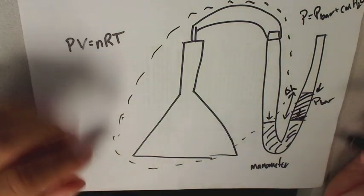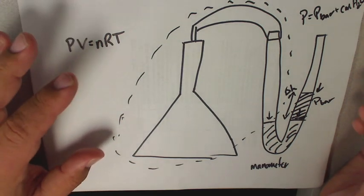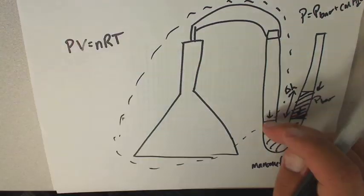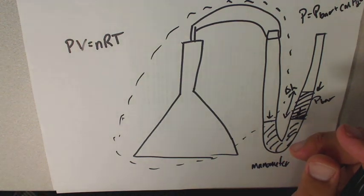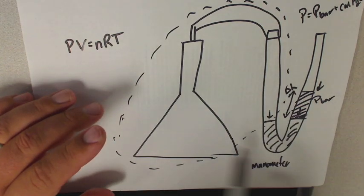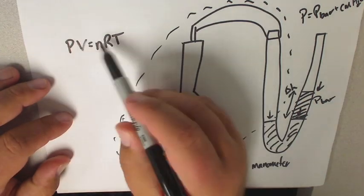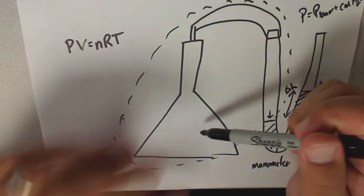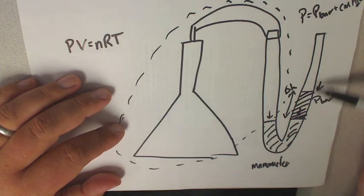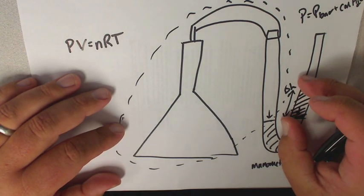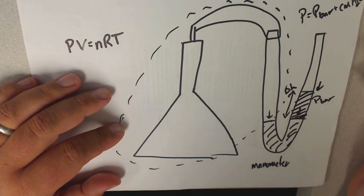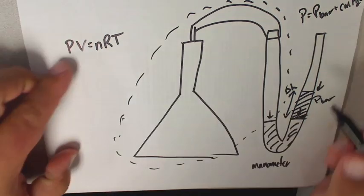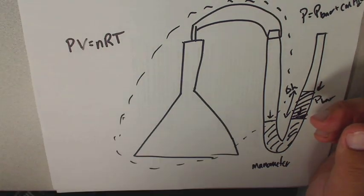In Experiment A, you are trying to keep the volume constant - always trying to get the water level at the same level - but you're going to heat up the flask. If temperature increases and volume is constant, then pressure has to increase as well. As you heat it up, the gas will expand, but you'll add water to increase the pressure weight on the open side, the volume goes back to its original size, and you can relate pressure and temperature.